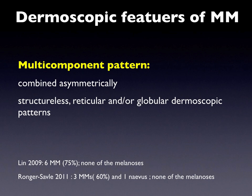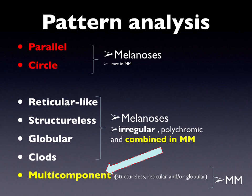Mucosal melanoma can show a multi-component pattern that is characterized by multiple patterns with irregular distribution. Parallel patterns and circles are rare in melanoma and are quite specific for melanosis, whereas the other dermoscopic patterns describing melanosis can also be found in melanoma.